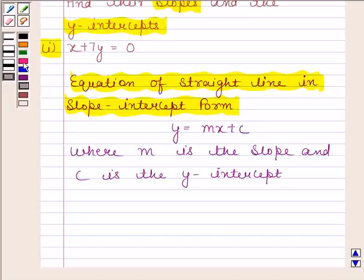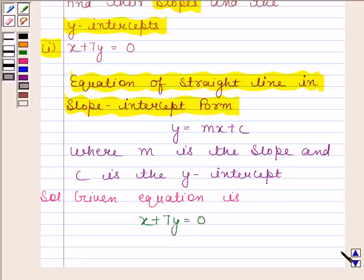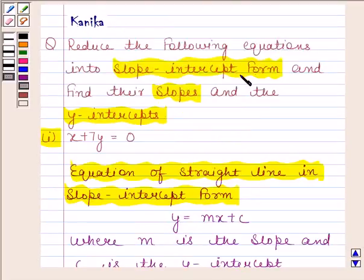Now begin with the solution. Given equation is x plus 7y equals 0. We have to reduce this equation into slope-intercept form and then find its slope and y-intercept.